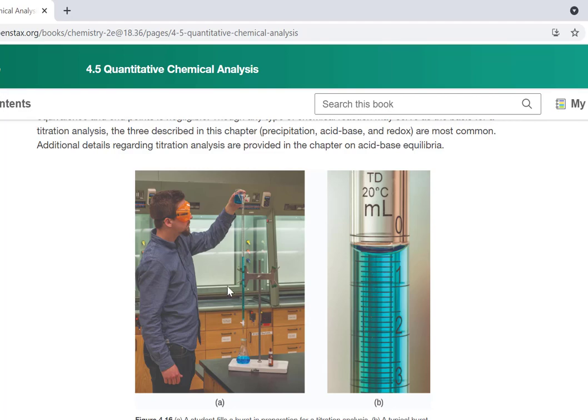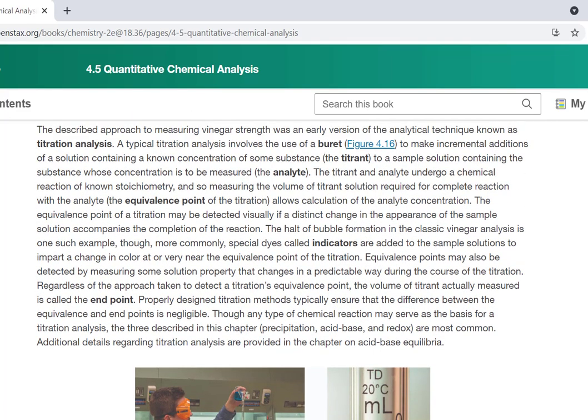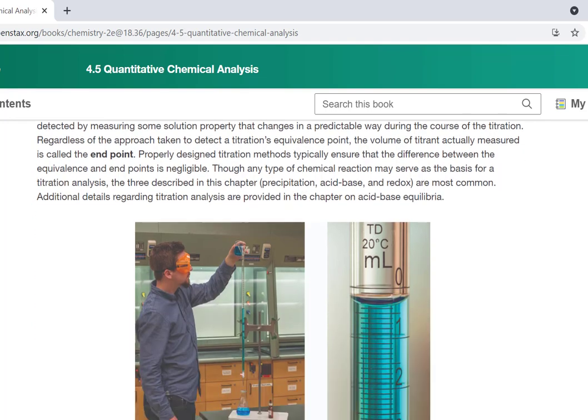And typically how a titration works is you will fill the burette with something that you know quite a bit about, so something that you know basically its concentration. This is called the titrant. So the burette is filled with the titrant, and then we add that titrant to something we're trying to measure.